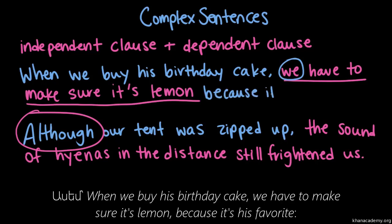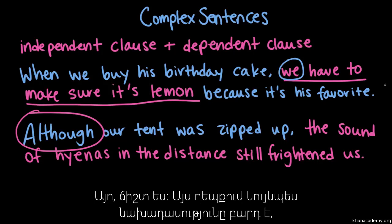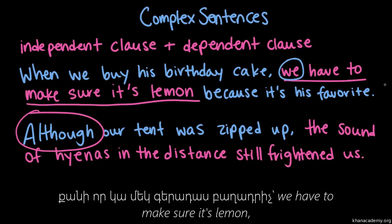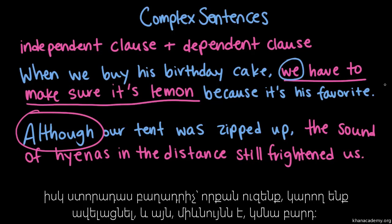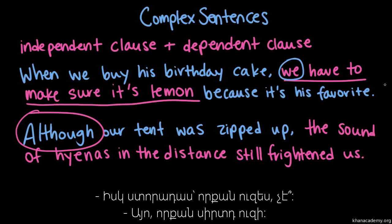What if I do something like this: 'When we buy his birthday cake, we have to make sure it's lemon because it's his favorite.' 'Because it's his favorite' is a dependent clause, right? That's right. And this sentence still completely works as a complex sentence because you still just have this one independent clause — 'we have to make sure it's lemon.' The thing about complex sentences is you can add more than one dependent clause if you want and it's still considered a complex sentence. So it has to have just one independent clause, but as many dependent clauses as you want.